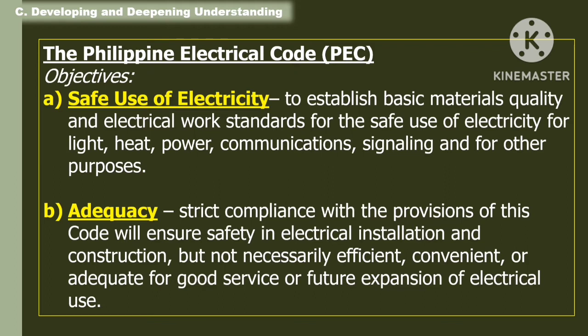The first objective is the safe use of electricity — to establish basic materials quality and electrical work standards for the safe use of electricity for light, heat, power, communication, signaling, and for other purposes. Another objective is adequacy: strict compliance with the provisions of this code will ensure safety in electrical installation and construction, but not necessarily efficient, convenient, or adequate for good service or future expansion of electrical use.